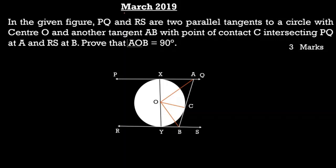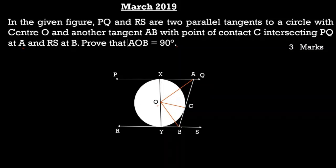In this diagram, PQ and RS are two parallel tangents to a circle with center O, and another tangent AB with point of contact C intersecting PQ at A and RS at B. Prove that angle AOB is equal to 90 degrees. Let us see what is given: PQ and RS are two parallel tangents to a circle with center O, and another tangent AB with point of contact C intersecting PQ at A and RS at B. We need to prove angle AOB is 90 degrees.